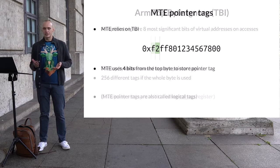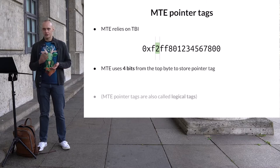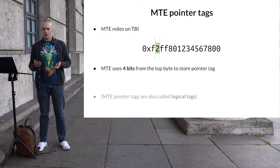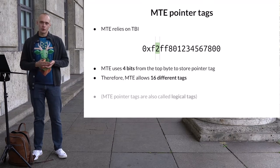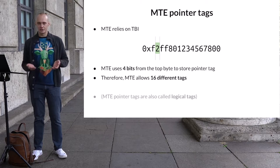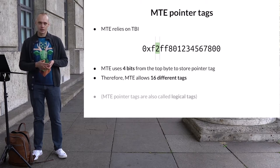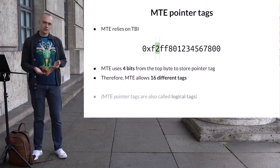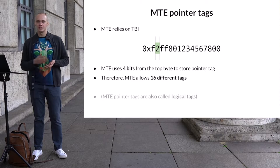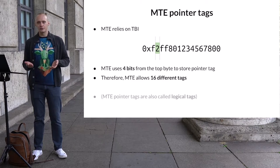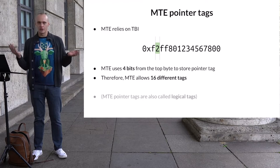However, instead of using the whole top byte, MTE only uses 4 bits. The remaining bits are left to be used by other ARM features. Having 4 bits for a pointer tag means that MTE allows up to 16 different tag values. Storing the pointer tag in the pointer itself is also great because it's easy to read or modify its value — you only need a few bitwise operations and no special instructions.